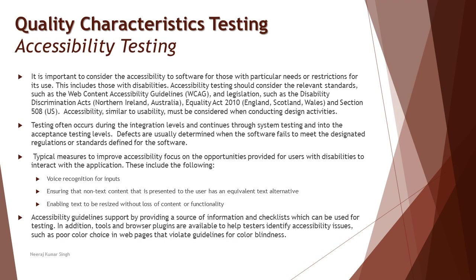To talk about accessibility, the word itself says we are talking about accessing a system. A general user does not have any problem accessing a system, assuming it is user-friendly enough. But we are also taking care of differently-abled users and trying to make sure the system is accessible to them as well. Not all quality characteristics are practiced for every product, but accessibility may be considered in scope when the target audience includes differently-abled users — and that's where accessibility testing becomes very crucial.